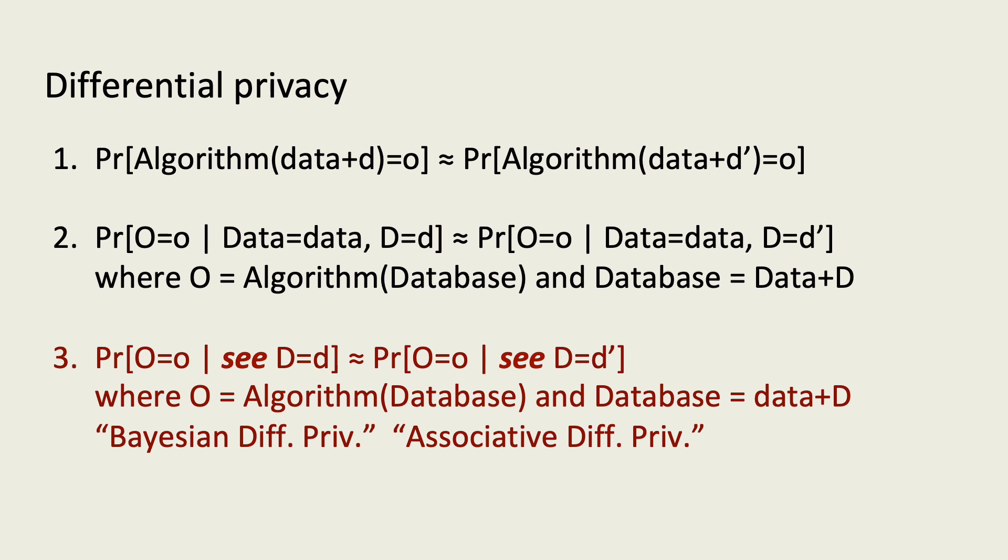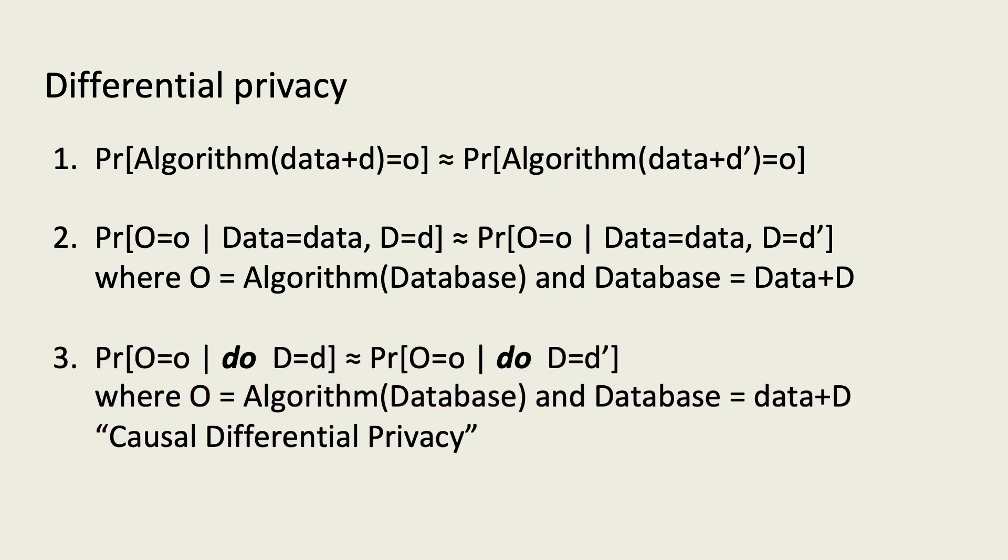It turns out that we can have the best of both worlds by switching from looking at associations or correlations to looking at causal effects. Here I'm using Perl's do notation to denote that rather than conditioning upon the value of a single changed data point, we are instead looking at the effects of a causal intervention setting that data point to have a particular value.